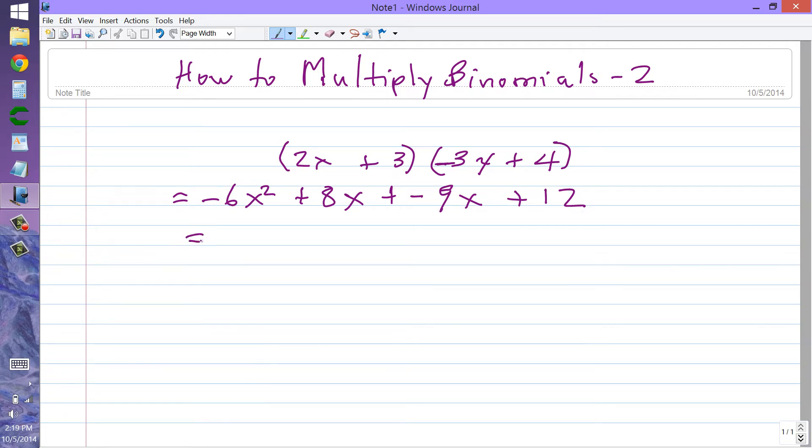Let's simplify that a little. We have minus 6x squared plus 8x plus minus 9x, or 8x minus 9x, so that would be minus x, plus 12.